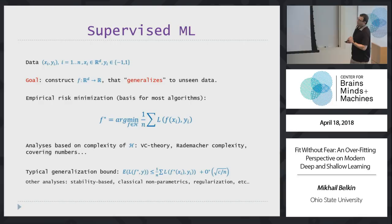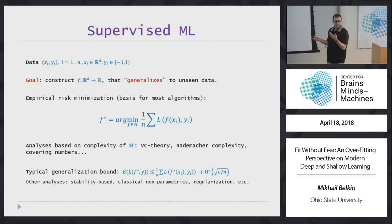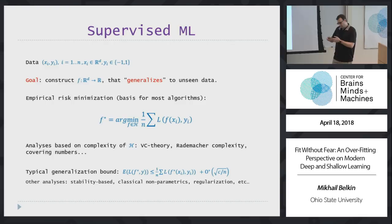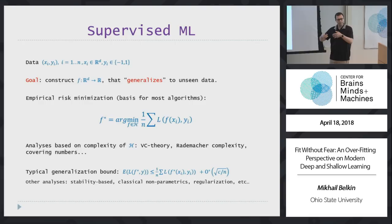Let me state the problem of supervised machine learning. You have data x_i, y_i. The x_i's are points in some d-dimensional space — features, say pixel values of images. The y_i's, for simplicity, are binary: minus 1 and 1. The goal of machine learning is to construct a function, given this data, from the feature space to R — or more specifically to {-1, 1} — that generalizes to unseen data, meaning it performs well on data from the same probability distribution.